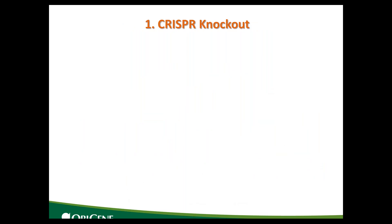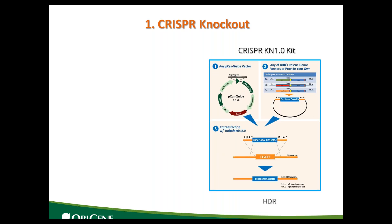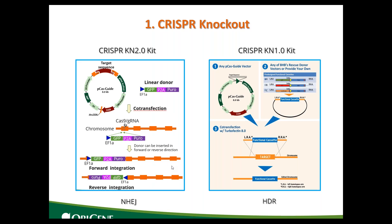To help you understand better, I will use the example of our company's CRISPR knockout kit. We have two kinds of knockout kits. First is the KN1 kit. This kit uses the HDR policy — the CRISPR kit cuts the target DNA, and then a plasmid donor, which includes the left homologous arm and the right homologous arm, will be integrated into the target site. The second kit is the KN2 kit, which uses NHEJ instead. It also uses Cas9 and gRNA to cut the target site, but in the second step, it uses a linear donor rather than a plasmid donor to be integrated into the target. For both cases, there is a functional cassette inside the insertion, which includes a poly-A fragment that will stop transcription at the target site.